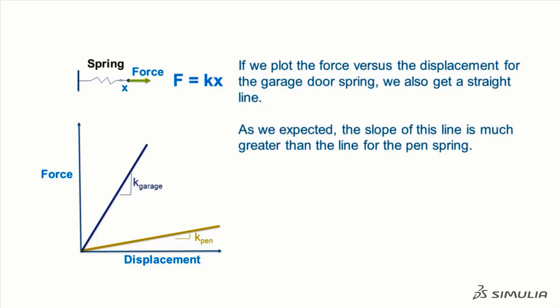If we plot the force versus the displacement for the garage door spring, we also get a straight line. As we expected, the slope of this line is much greater than the slope of the line for the pen spring.